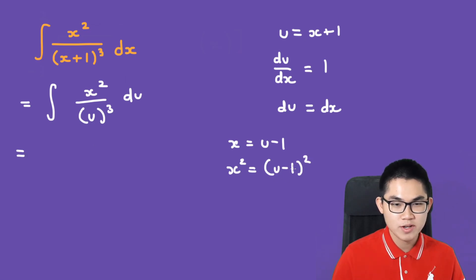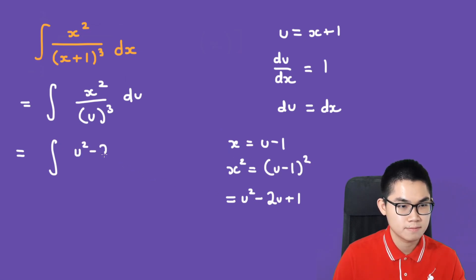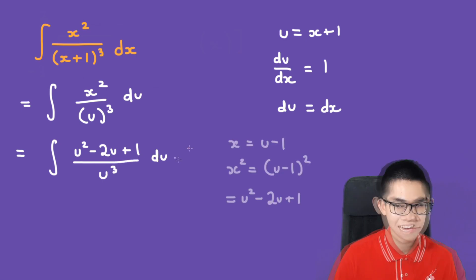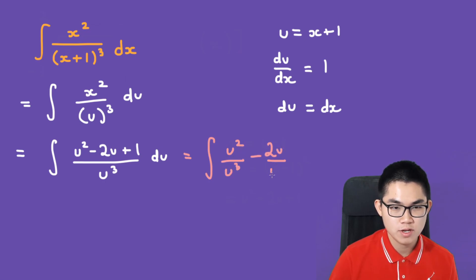So x squared is (u minus 1) to the power of 2. Expanding, that gives us u squared minus 2u plus 1. Substituting back, the integral becomes: (u² minus 2u plus 1) over u³, which we split as u²/u³ minus 2u/u³ plus 1/u³, all times du.